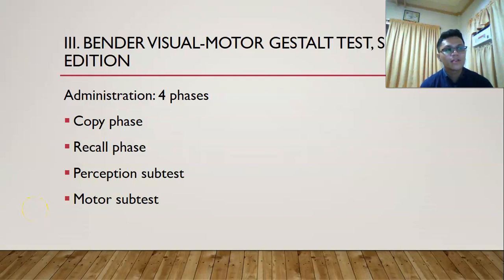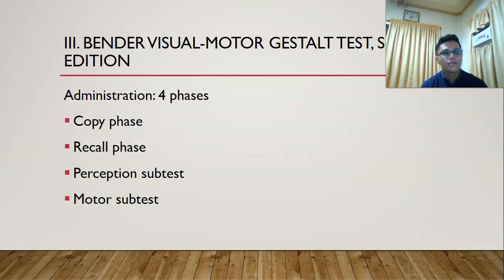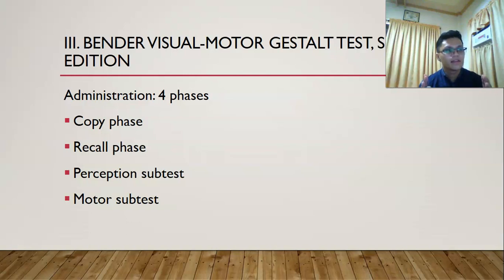To continue, in the motor test, it consists of a sheet of paper with a sample item and four test items. The examinees are first shown the sample item depicting a rectangle with two medium-sized dots on either end, and then a series of smaller dots connect the two medium-sized dots.